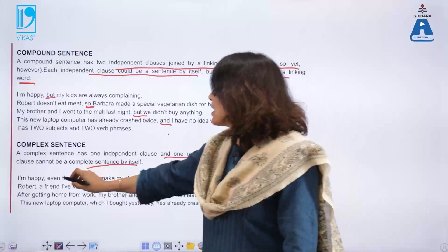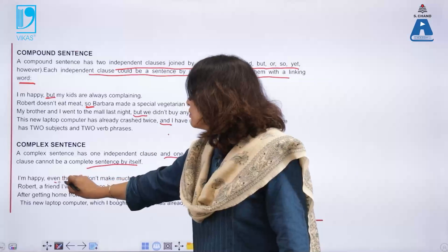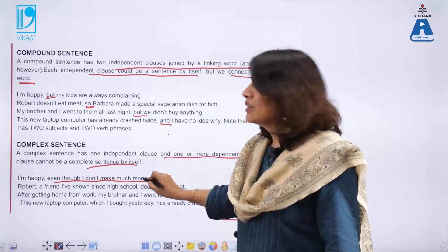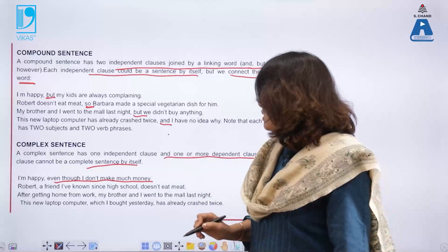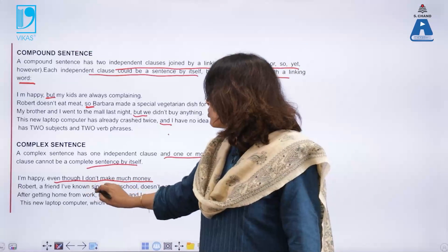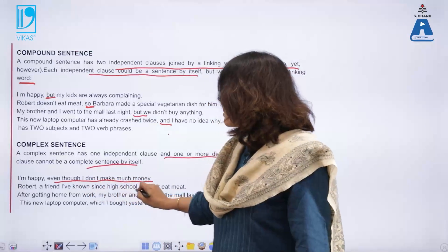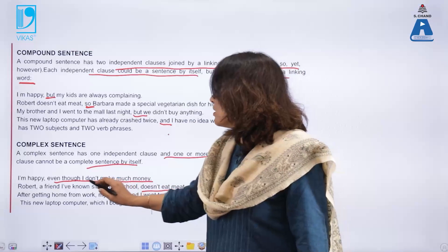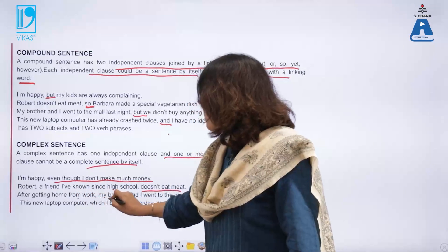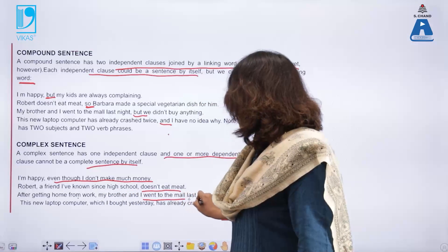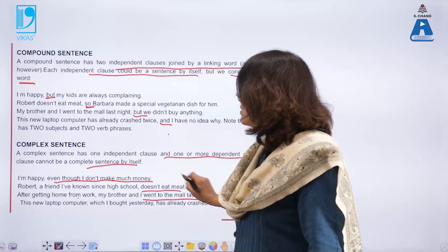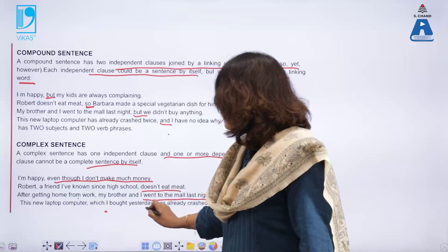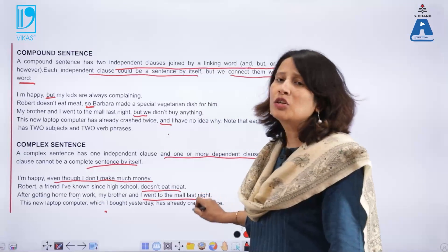For example: 'I am happy even though I don't make much money' is a complex sentence. 'Robert, a friend I have known since high school, does not eat meat.' 'After getting home from work, my brother and I went to the mall last night.' 'This new laptop computer which I bought yesterday has already crashed twice.'